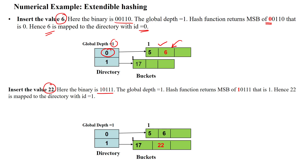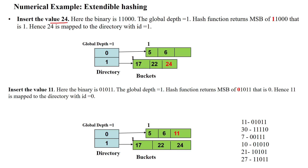Next we insert 22, which has binary string 10111. The global depth is still 1, so the most significant bit is 1. We check the memory bucket pointed to by index 1 — it has empty space, so 22 is stored there. Then we insert 24, whose binary string is 11000. The most significant bit is 1, so we check the bucket at directory index 1, which still has empty space, and we store 24 there.